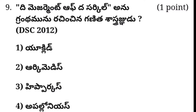Option two: Archimedes. Option three: Hipparchus. Option four: Apollonius. Answer in the comment box below. The answer is Option two — Archimedes. The measurement of the circle — Gannata Shastra — Archimedes. Option two is correct.